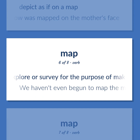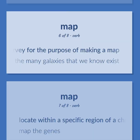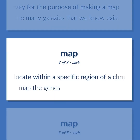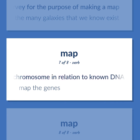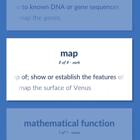Explore or survey for the purpose of making a map. We haven't even begun to map the many galaxies that we know exist. Locate within a specific region of a chromosome in relation to known DNA or gene sequences. Map the genes. Make a map of; show or establish the features or details of. Map the surface of Venus.